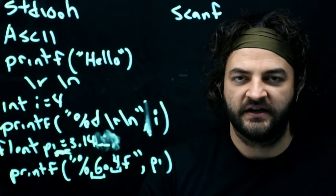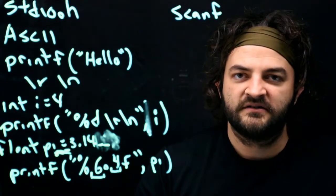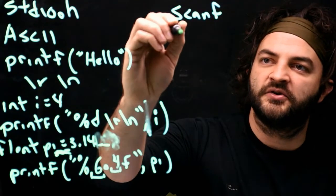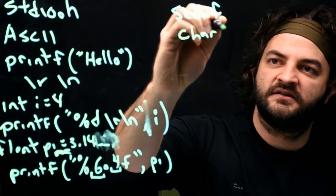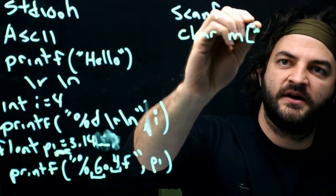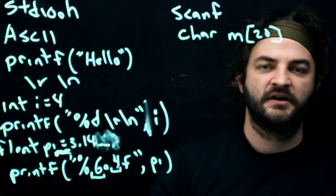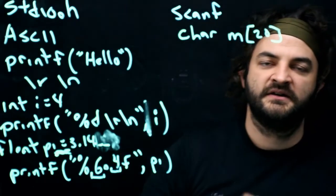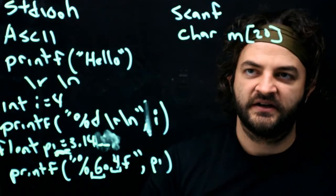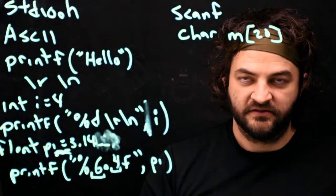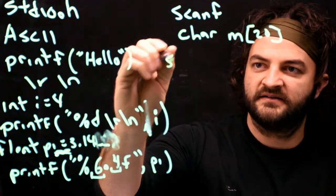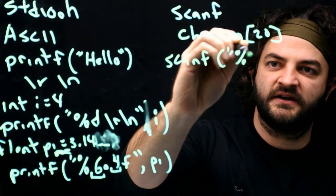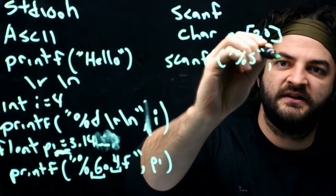So in C, unless we're using string.h, which we're not going to get that far, we don't have a string variable type. Instead, we have character arrays. So I will call it m for message. And I'll store up to 20 characters coming in from the keyboard. So this is an array of characters. And each character is one ASCII letter. So now I can say scanf from a string, %s, and put it into my message.